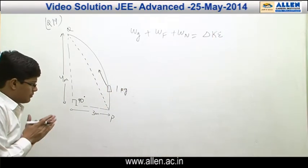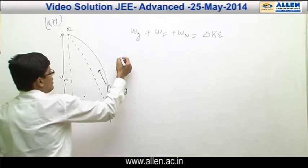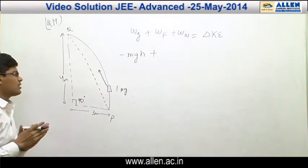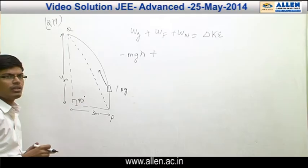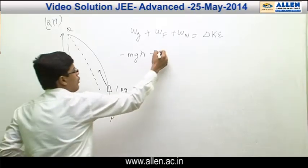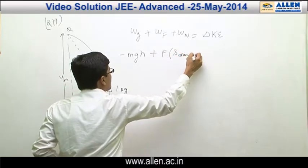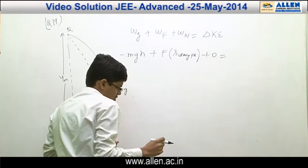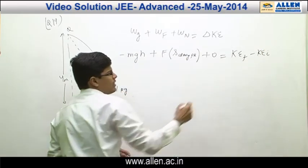Work done by gravity: since the height ascended by the block is 4 meters, the work done by gravity will be −mgh. Work done by force F: since F is a constant force of magnitude 18 newton and its direction is also constant, the work done will be force into displacement along the direction of force, which is F × s along PQ. Work done by normal is zero. This equals the change in kinetic energy.